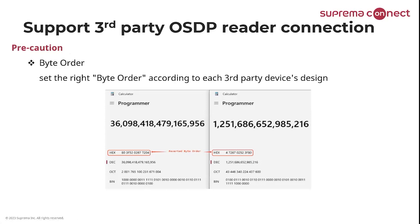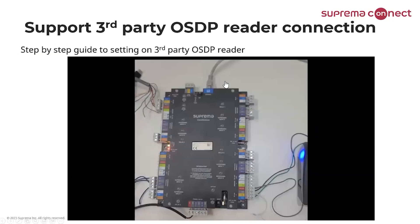Byte order: there is MSB byte order and LSB byte order. Depending on which third-party device you are using and how the byte order has been set up, it can change the value entirely. The HEX data with a reverted byte order will give totally different information and data, which could cause other issues. Please take precaution of this matter as well. Now, step-by-step guide for setting up a third-party OSDP reader.